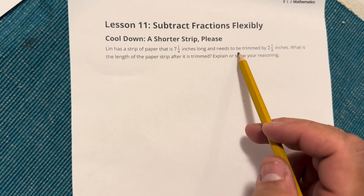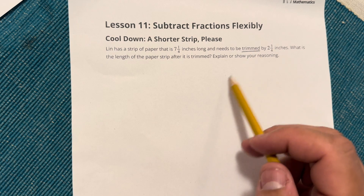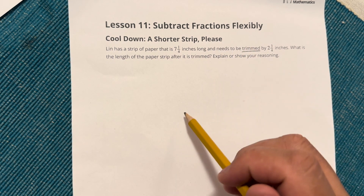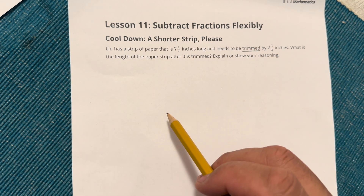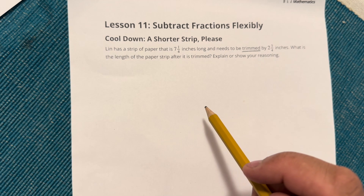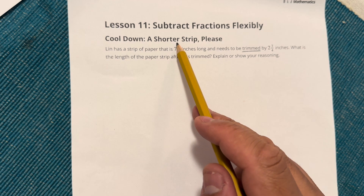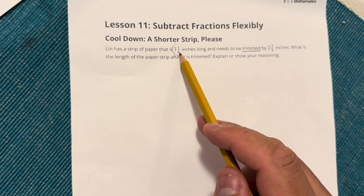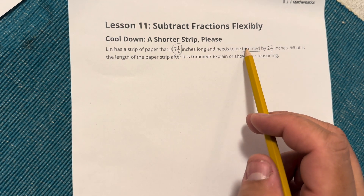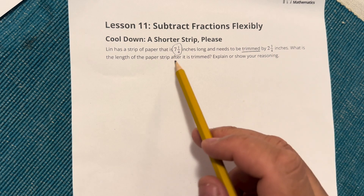One of the key words we see here is 'trimmed.' What comes to mind when you hear the word trimmed? Is something being added or taken away? Something is being taken away — therefore we are subtracting. So we know that the strip of paper is seven and a quarter inches long and it needs to be trimmed or cut by two and three-quarters inches.